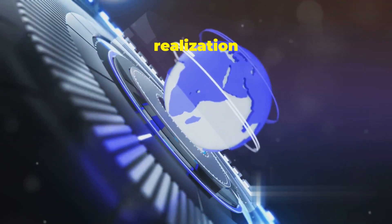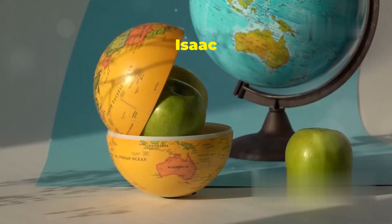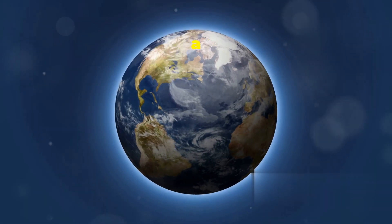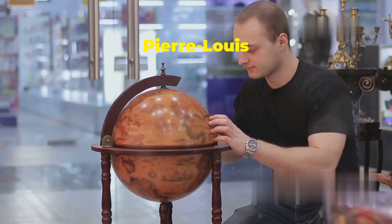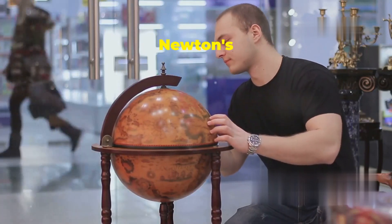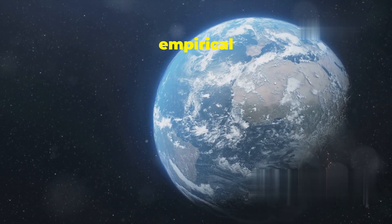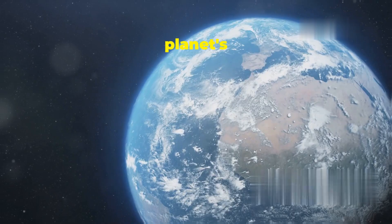The realization that Earth is not a perfect sphere was a gradual unfolding of scientific understanding. Isaac Newton theorized about Earth's oblateness. Newton predicted that a rotating Earth would bulge at the equator due to centrifugal force. Pierre-Louis Maupertuis confirmed Newton's theories. Maupertuis led an expedition to Lapland to measure the length of a degree of latitude. His findings provided empirical evidence for Earth's oblateness, revolutionizing our understanding of the planet's shape.